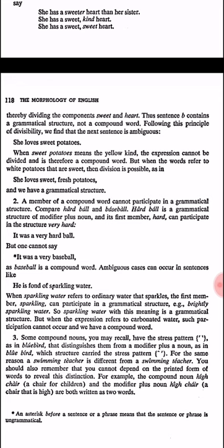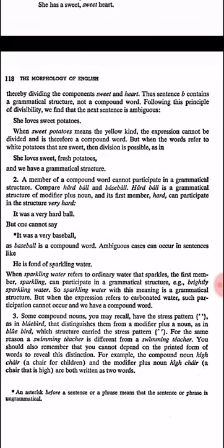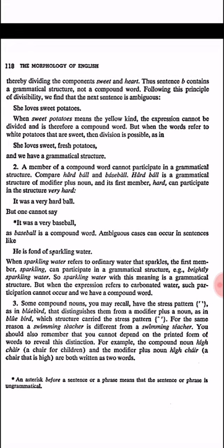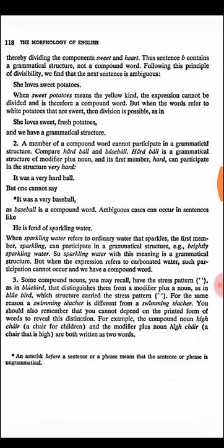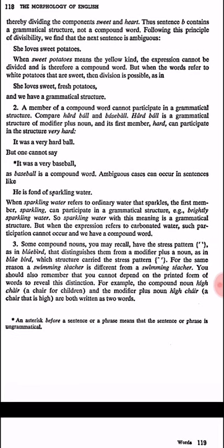This creates ambiguity. For example, 'she loves sweet potatoes' — here we have two different meanings. If it refers to the yellow kind, it cannot be divided, so it is a compound word. But if it refers to the white kind (just sweet-tasting potatoes), it is a grammatical structure. الموضوع شوي بعيد — بس المهم تحفظون الفرق الأول.